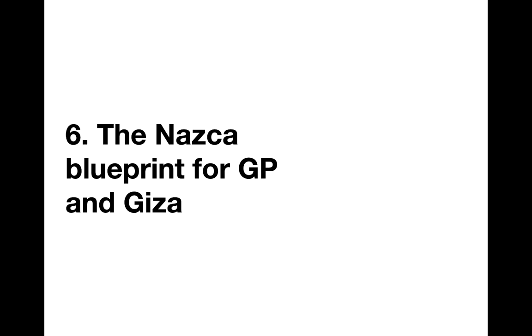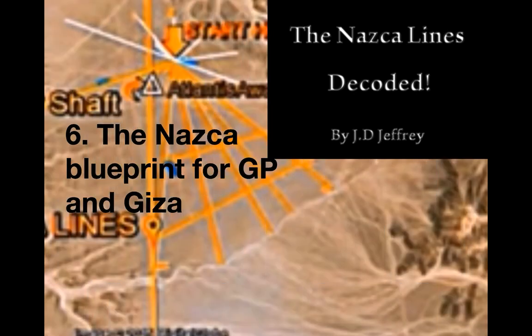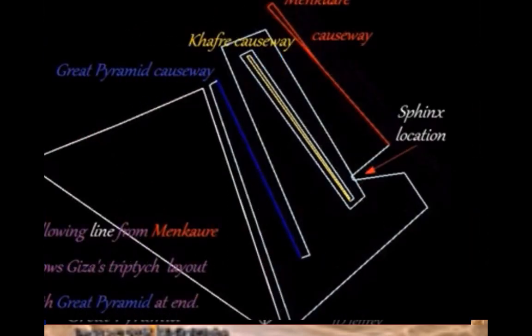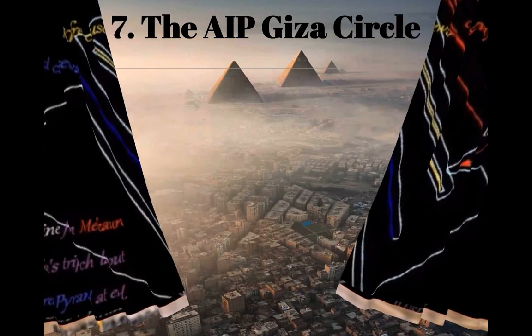Sixth: the Nazca blueprint for the Great Pyramid and for Giza. J.D. Jeffrey has YouTube videos about the Nazca lines. You can see the 3D pyramid formed by lines on the plain in Nazca — visible from Google Earth in that part of Peru. He finds a 3D picture of the Great Pyramid there, including white halos coming out of the top, and he also finds a 2D blueprint for the Sphinx and the pyramids in Giza. That is another unified plan.